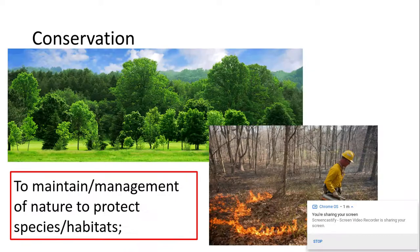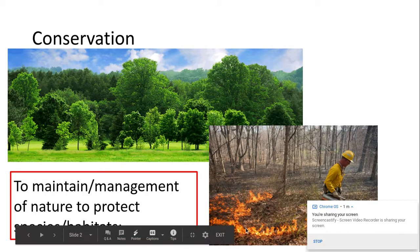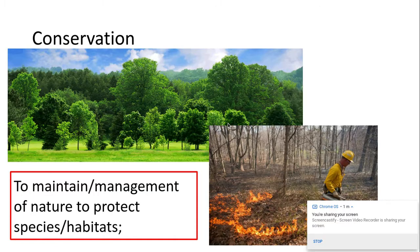So conservation is where you maintain — you maintain it through, for example, burning an area or cutting something down to allow other trees to grow. Whereas preservation is where you leave it alone; it's untouched.